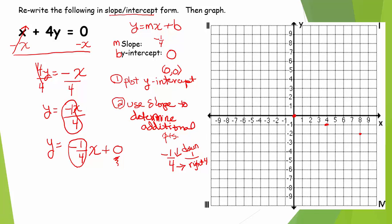If I'm going down and to the right, to get points going the other direction I do the opposite: up 1 to the left 4. Up 1 to the left 4 again. I can continue up 1 to the left 4, but then I'd be off my graph.